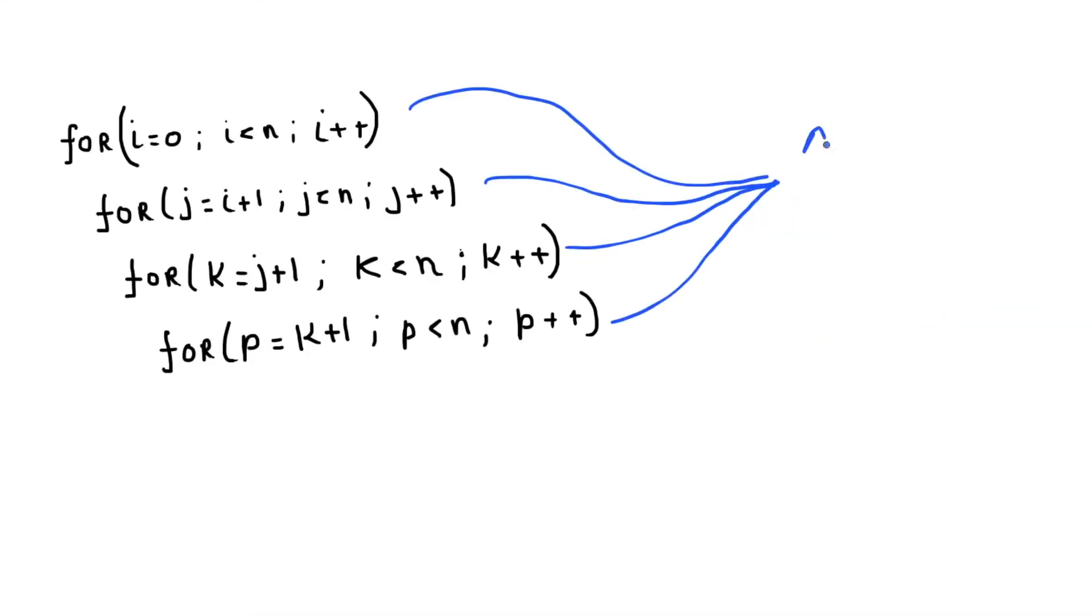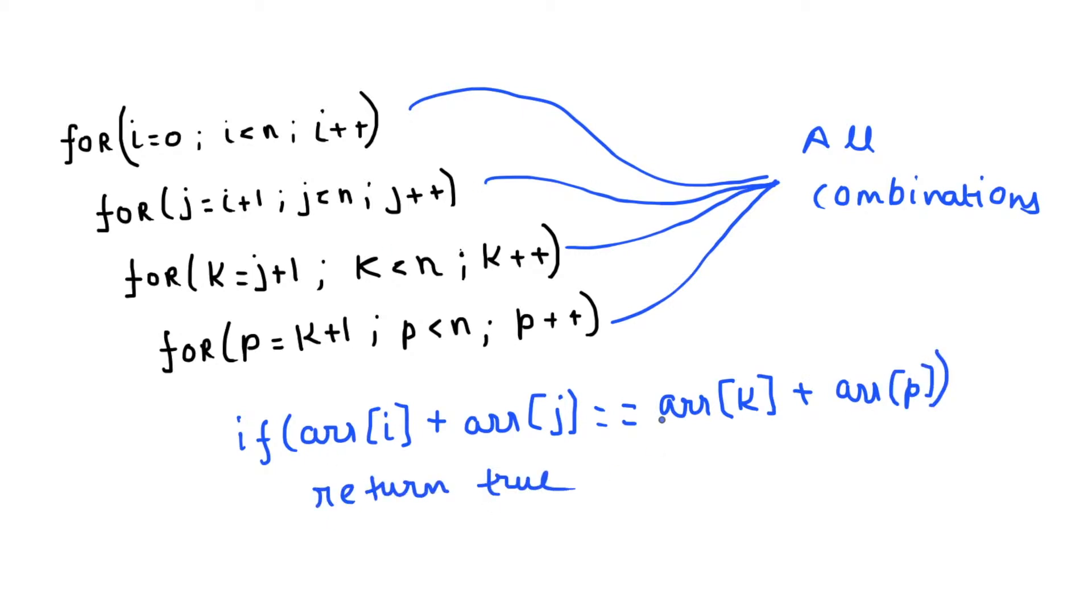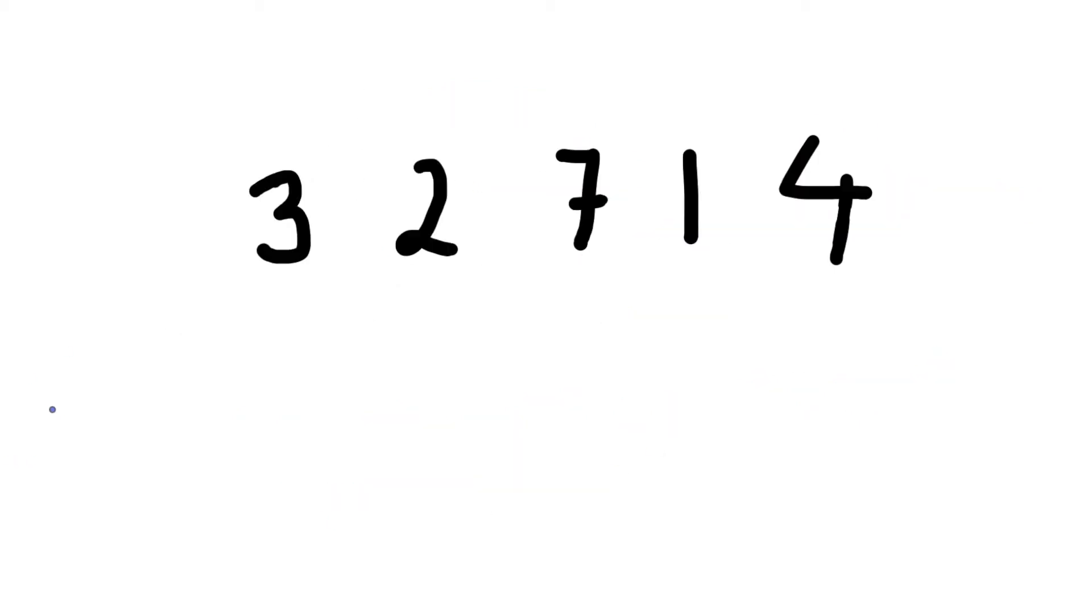The simple solution that is coming to my mind is to find all combinations such that a plus b is equal to c plus d, but that is not an optimal solution for this problem. Can you think of any data structure that can help you in this scenario? Yes, we can use a hash map to solve this problem.